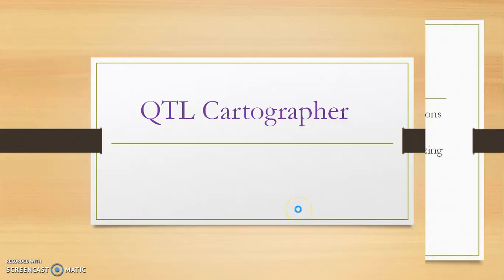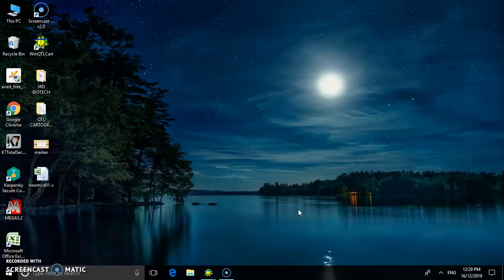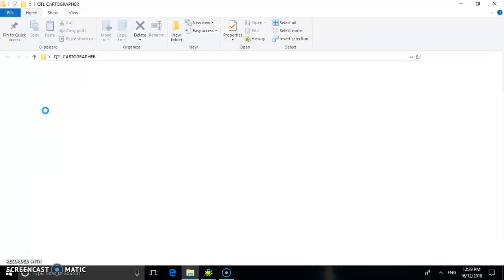QTL Cartographer is a tool that maps the quantitative trait loci in cross populations from inbred lines. WinQTL Cart is a powerful graphic tool for presenting and summarizing the mapping results, and can import and export data in a variety of formats. To perform the QTL Cartographer analysis, you need the data which I have stored in the QTL Cartographer file.